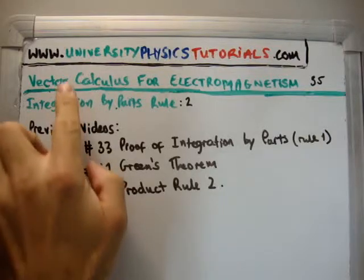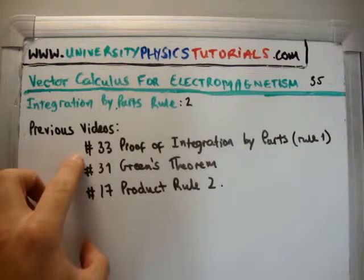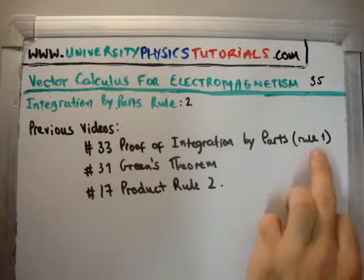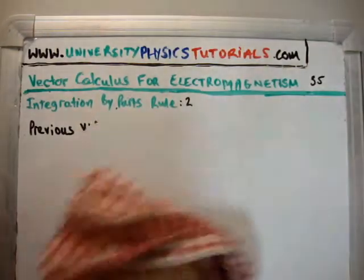I'd like to draw your attention to my website, universityphysicstutorials.com. So the videos which are relevant to this one are, first of all, number 33, where I discuss the proof of integration by parts, and I call that rule 1. Video number 31, where I discuss Green's theorem, and video number 17, where I prove product rule number 2. So basically we're just going to apply all of these and we're going to move on from there.